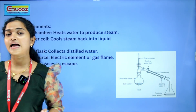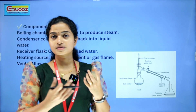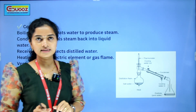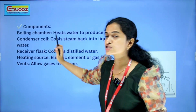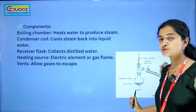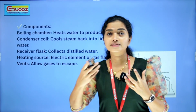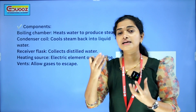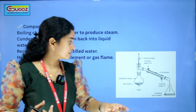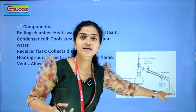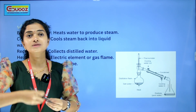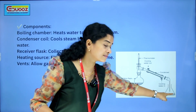Mainly in our lab, we use distilled water. The components of the distillation apparatus include: a boiling chamber — that heats water to produce steam — then a condenser coil that cools the steam back into liquid form. That condensed water is collected. The steam goes back to liquid — that is distilled water.